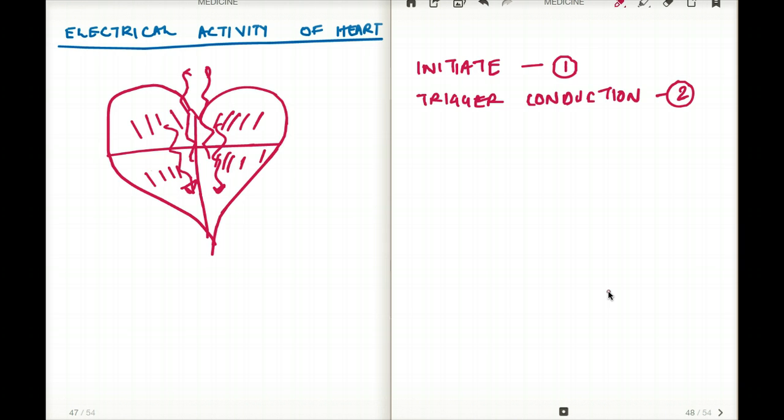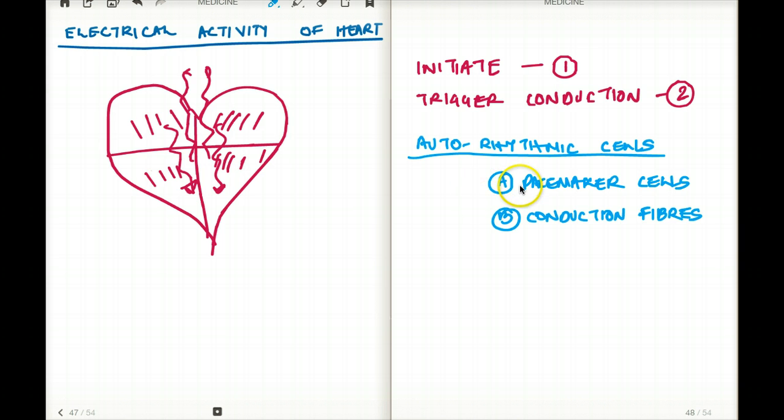Only then we are going to have a very synchronized contraction of the heart. Now these auto-rhythmic cells can further be divided into two types of cells. Those two types of cells are the pacemaker cells and the conduction fibers.